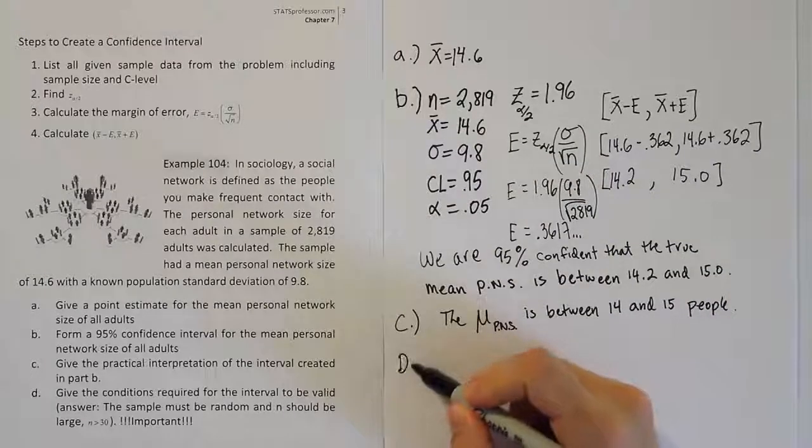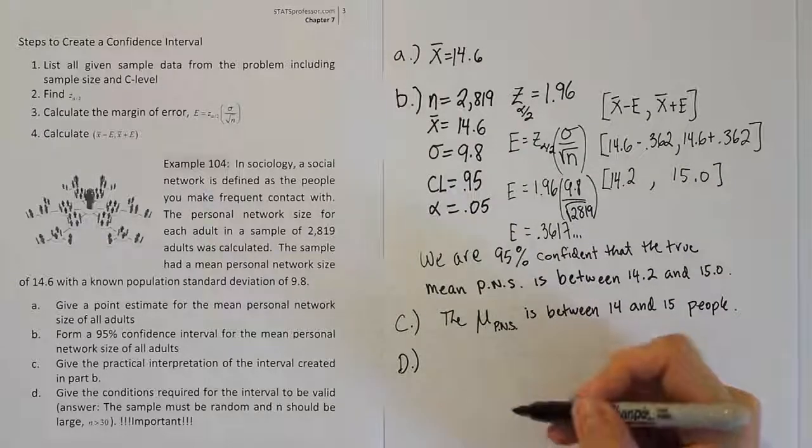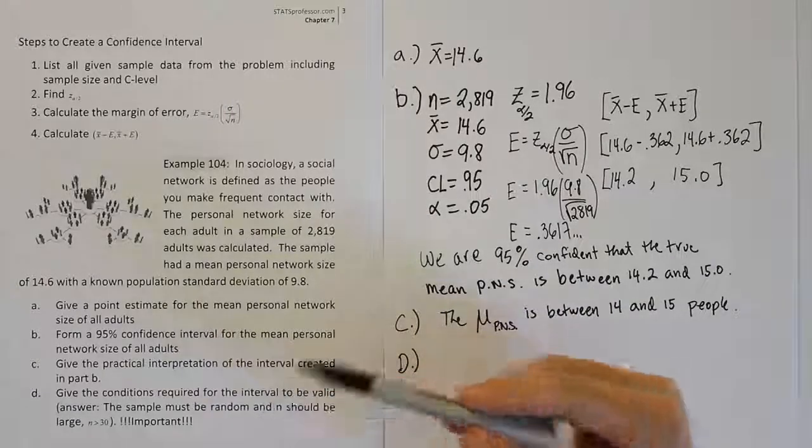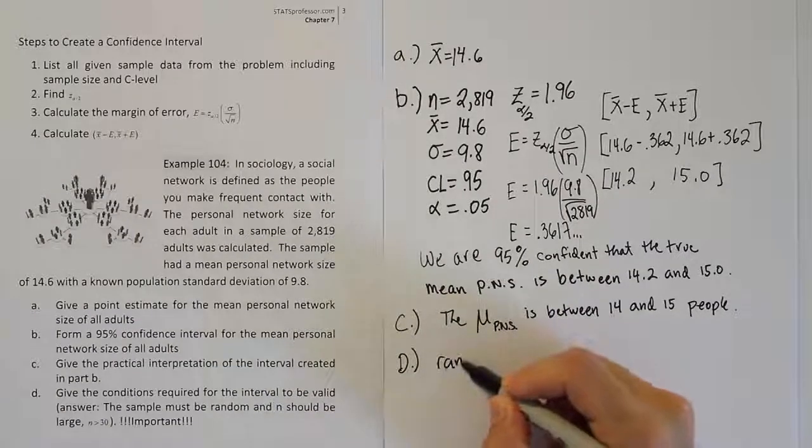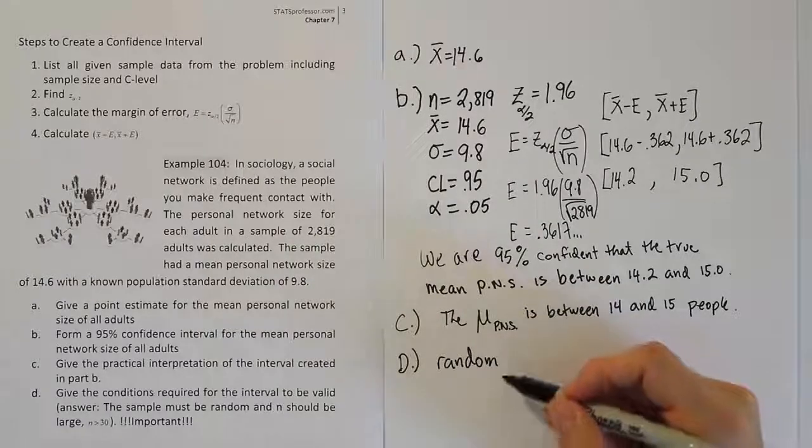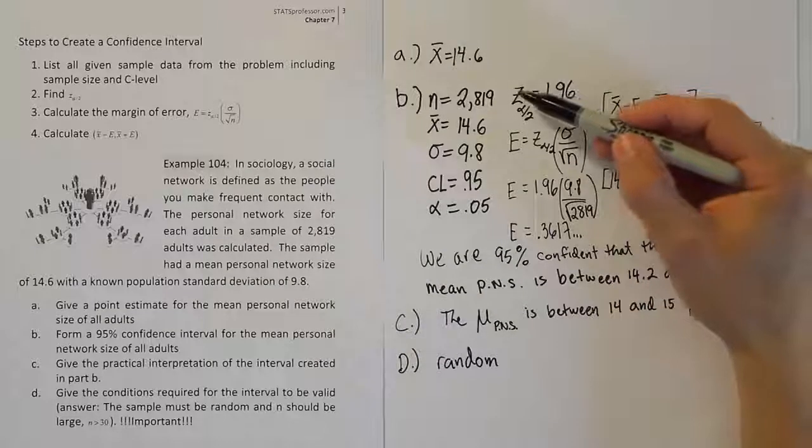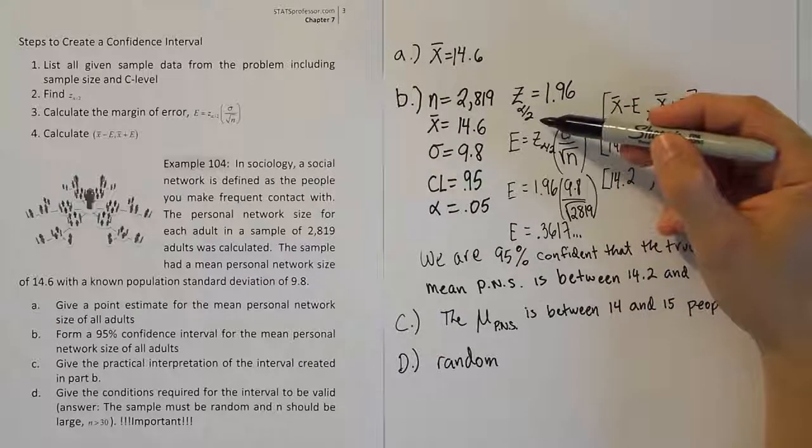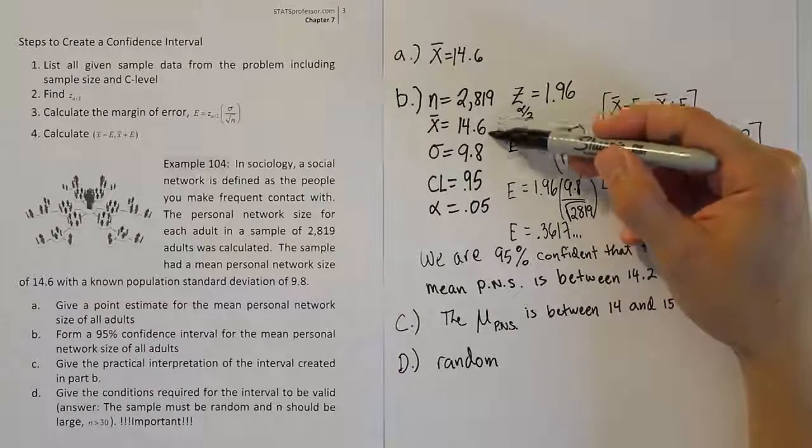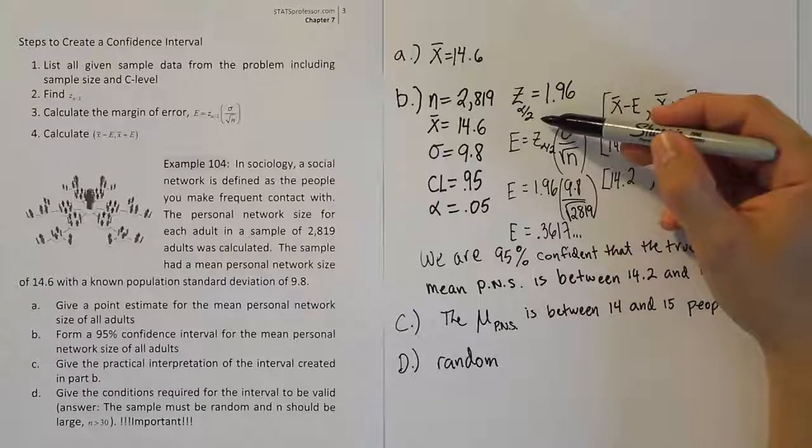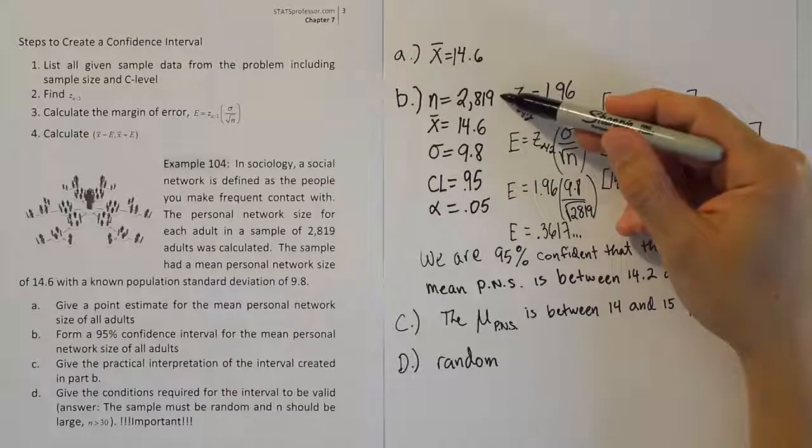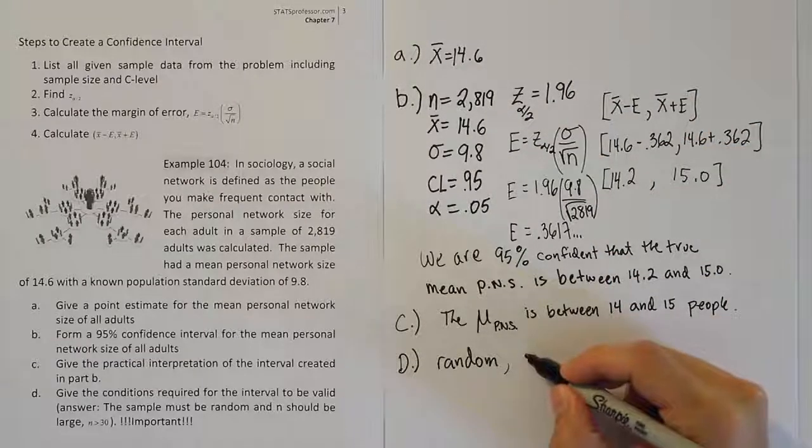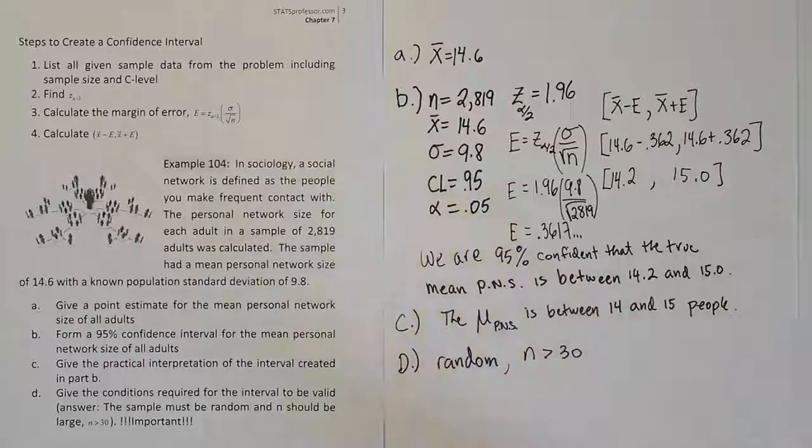The final part of the problem, part D, is to answer what are the conditions that are required for the interval to be valid. These are actually mentioned in the original problem. The sample must be random. Obviously, you want to make sure that you take a random sample when you're doing a study like this so you have a representative sample. We relied on the fact that the sample size was large here to let us use Z α/2. Implicitly, when you use Z α/2, you're assuming that we have normality for X̄. We can assume that here because under the central limit theorem, as long as n is larger than 30, we can usually assume that X̄ will be at least approximately normal. The two conditions are that the sample is random and that n is basically greater than 30. If those are met, then the interval we just created should be valid.